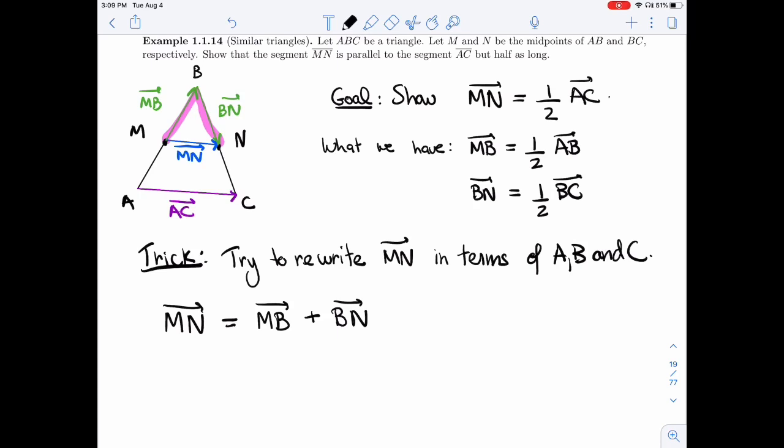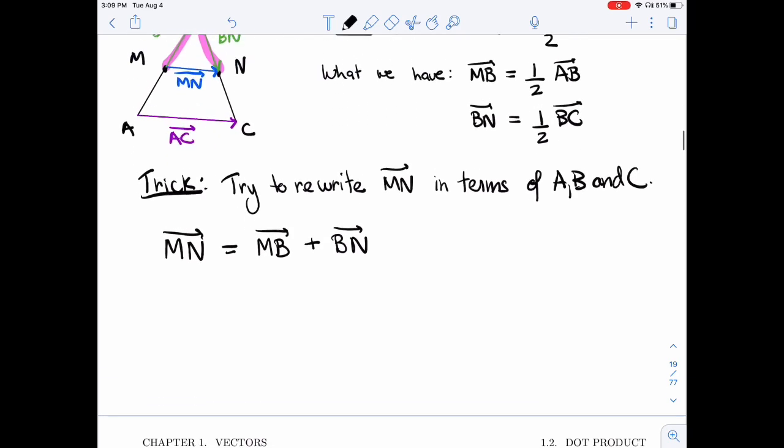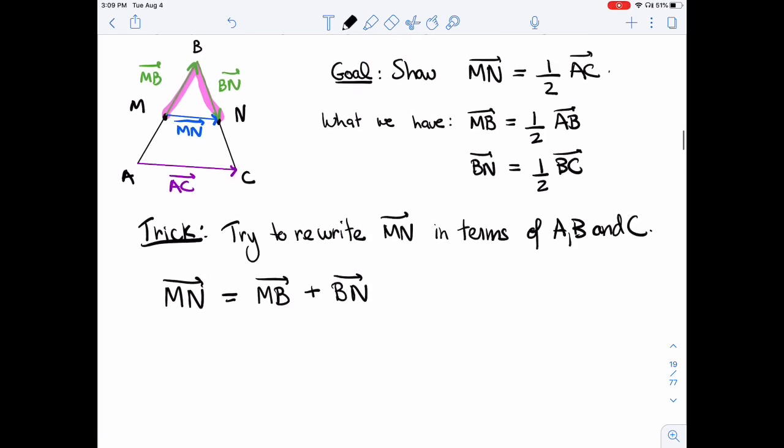I'm still using M and N, but I'm a bit further along. I have B involved at least. And then I'm going to use this right here. I can replace MB and BN by half of AB because M was the half point, and half of BC because N is the halfway mark.